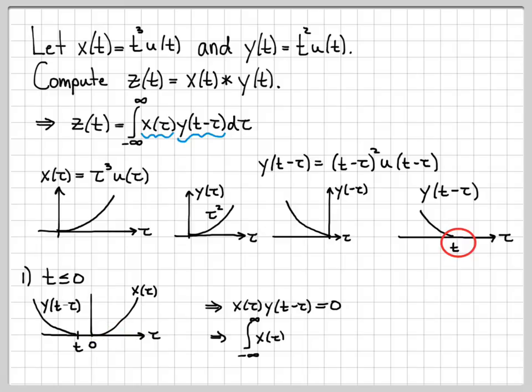which means if I integrate that product, I'm integrating 0 over all time. Well, that's a really easy integral to do. It's just 0. So that wasn't too bad. So we now know that z of t is equal to 0 for all time less than or equal to 0.